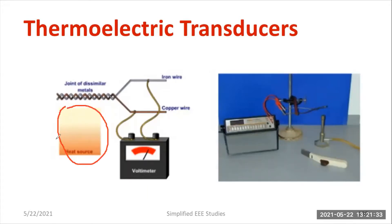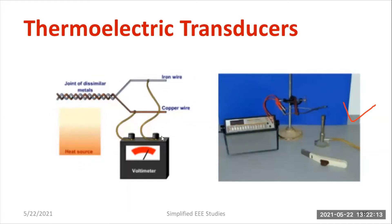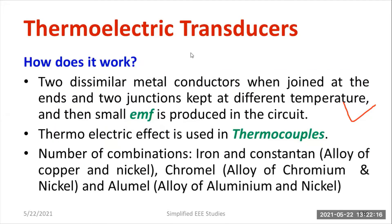To measure the temperature of a heat source, you arrange an iron wire and a copper wire. One junction acts as the hot junction and another acts as the cold junction — you join two dissimilar metals in this fashion, keeping the heat source near that junction. The difference in temperature directly indicates the EMF, so delta T is directly proportional to EMF. This is the setup for measuring temperature in terms of EMF using a thermoelectric transducer.